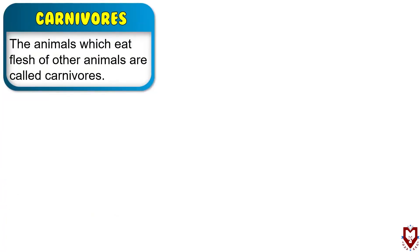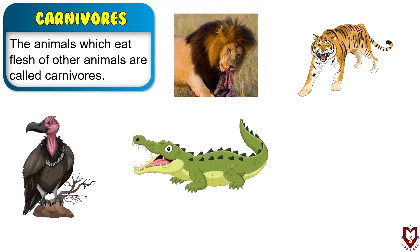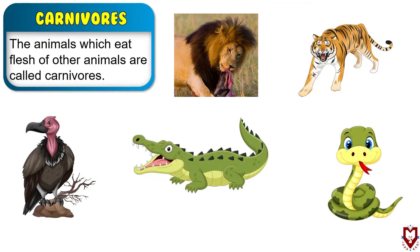Now let's learn about carnivores. The animals which eat the flesh of other animals are called carnivores. Animals that eat other animals are also called flesh-eating animals. Lion, tiger, vulture, crocodile, and snake are a few examples of carnivores.